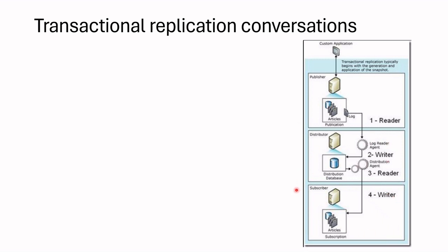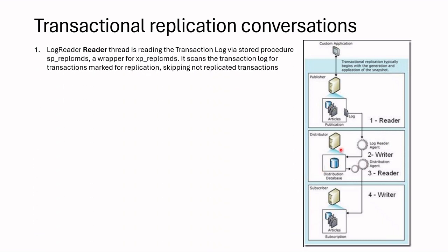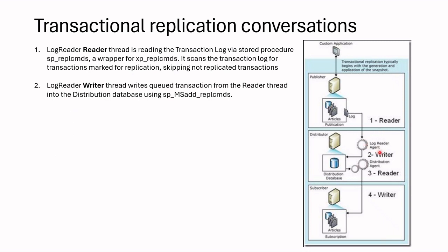Then we should examine the performance of each step — this will help find where the bottleneck is happening. When transaction replication happens, there is a log reader agent created inside the distributor. This agent has two threads: one reader thread and one writer thread. The reader thread runs the sp_replcmds stored procedure and scans the transaction log for any transactions to be replicated. After getting the transaction logs, the writer thread in the distributor writes these transactions to the distributor database.